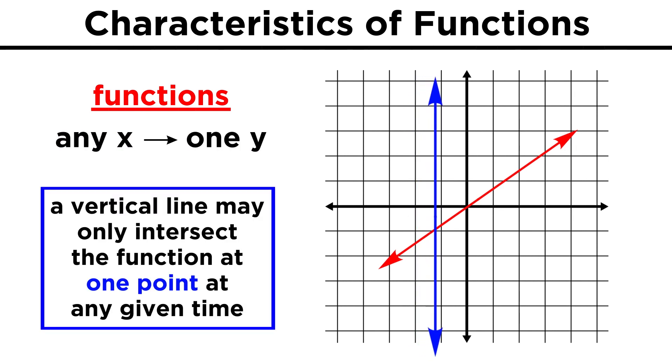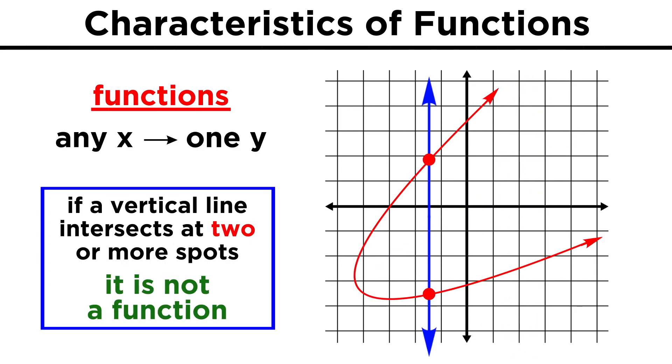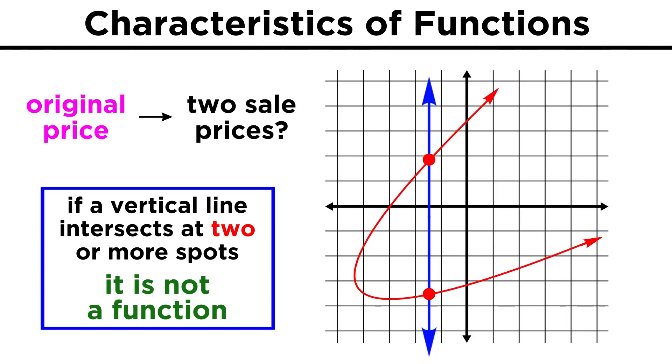Then if we move a vertical line across a function, it will only intersect that function at one point, wherever the vertical line may be. If the vertical line intersects at two or more spots, it is not a function. That would be as though we plugged in the regular price of an item, and got back two different numbers for the sale price.